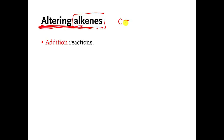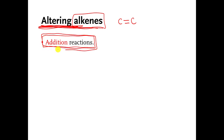If you remember, a molecule with an alkene functional group is a molecule that has two carbons double bonded to each other. I am going to talk about a bunch of different kinds of chemical reactions that are usually called addition reactions, and I will explain why they're called addition reactions right here. If you remember, carbon atoms have to make four covalent bonds in organic molecules.